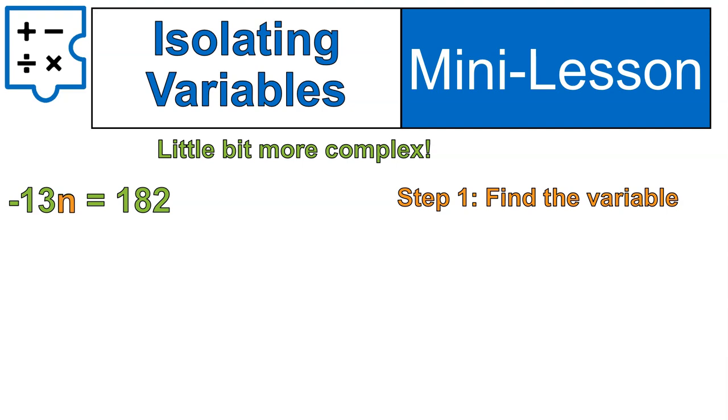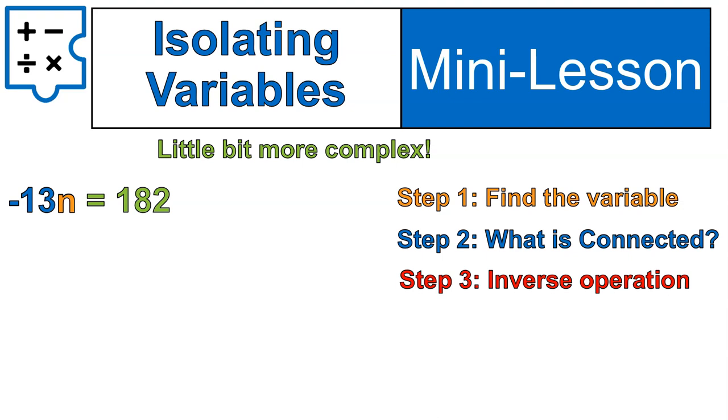All right. Welcome back. Our variable n. What's connected to it? Negative 13. This means times negative 13. So we're going to do the inverse, which is dividing both sides by negative 13.